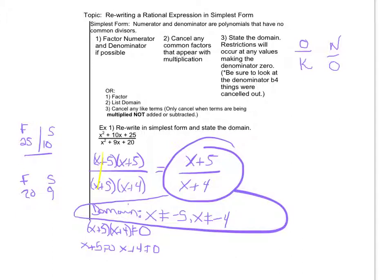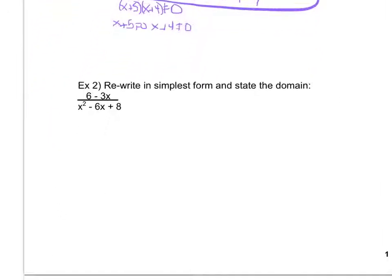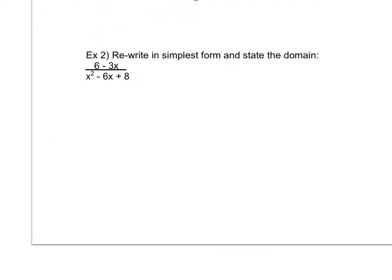Looking at the second example I'm going to go through the exact same steps. So notice on this one I see right away on top I have a GCF of 3. So I'm going to take that GCF out. Doing so leaves me with 2 minus x. Once again on the bottom I have a trinomial that starts with x squared. So I can use my factor sum tables. I'm going to do factors of 8 with a sum of negative 6. Well I know that negative 4 times negative 2 is 8 and negative 4 plus negative 2 is negative 6. I'm going to say that factors to be x minus 4 times x minus 2.